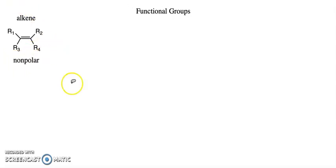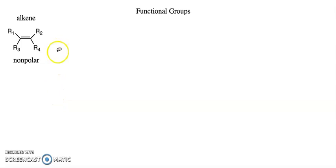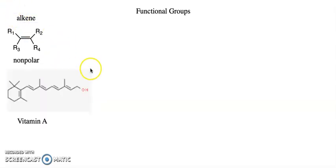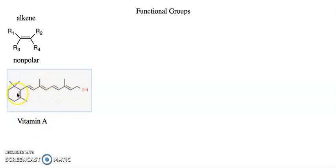The alkene functional group tends to be nonpolar, having only London dispersion forces as its major intermolecular force. An example of an alkene is vitamin A — a rather more complicated one — and you can see all of the alkenes, the double bonds, in this molecule.